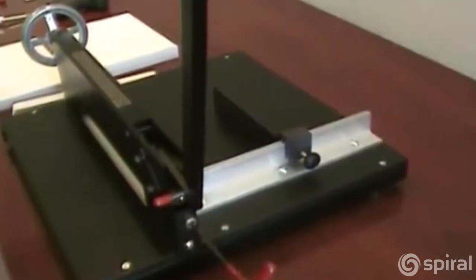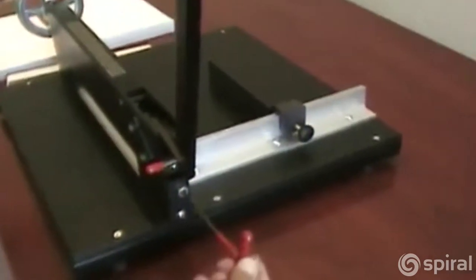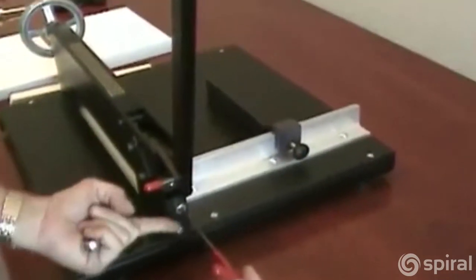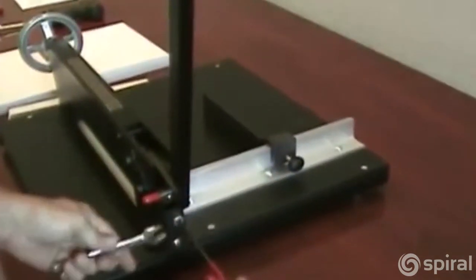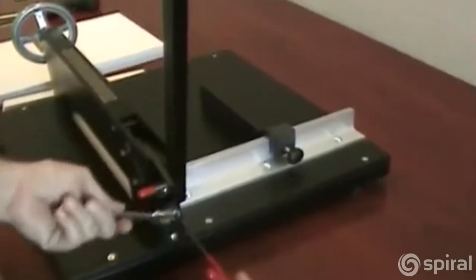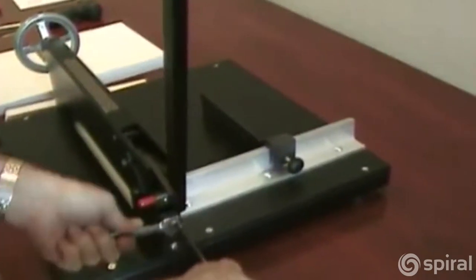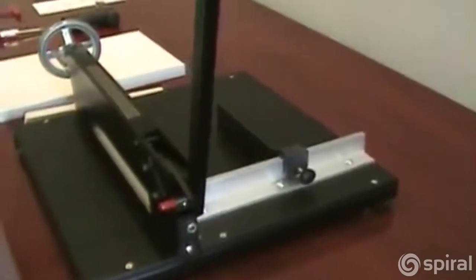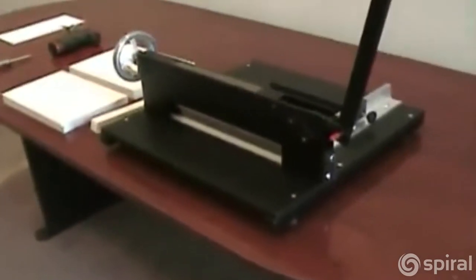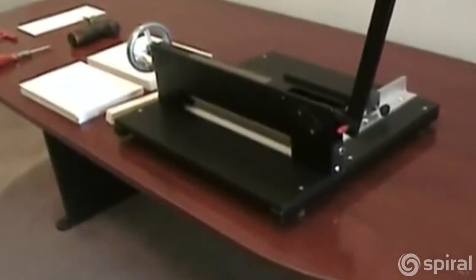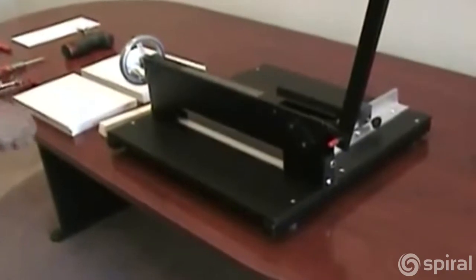Just enough so you can get it finger loosened. And you're going to back that Allen screw off about an eighth of a turn and re-tighten the nut. So at this point you want to check the cut again. Cut some more paper. Make sure you're cutting all the way through the entire stack.